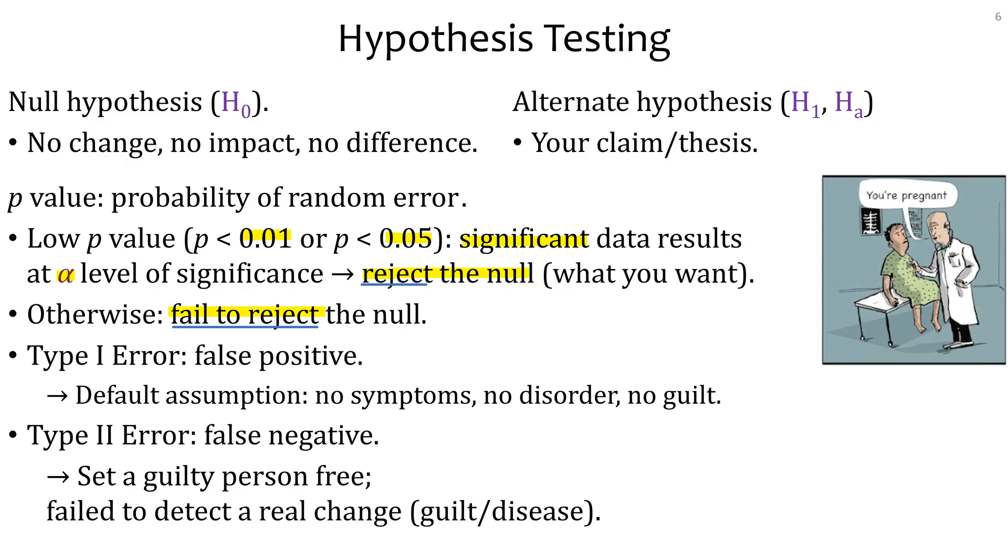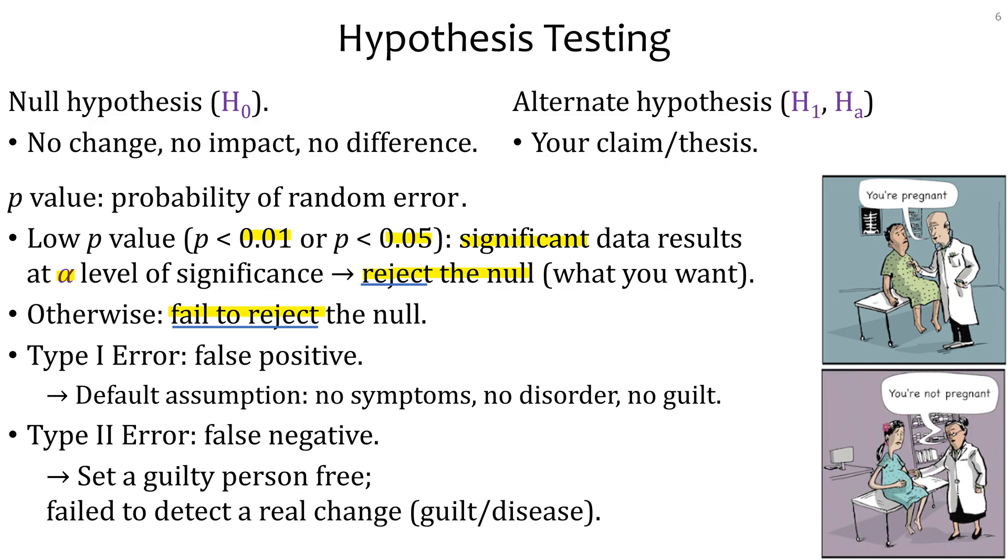If you want a case of pregnancy, it's kind of like type 1 error is you have a man and you detect that he's pregnant. Type 2 error is someone who is pregnant and you think that she's not. The default is that the person is not pregnant unless proven so. Those are the two types of error that you can have.